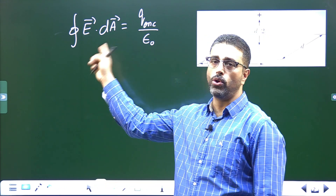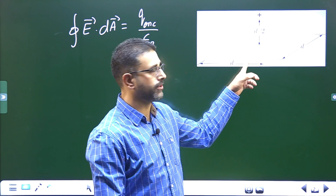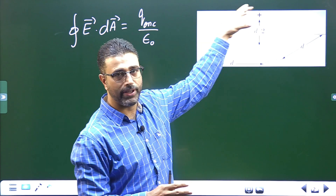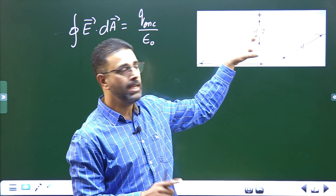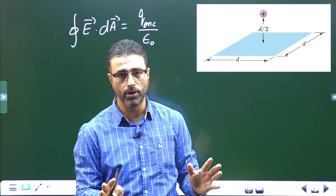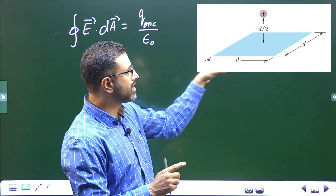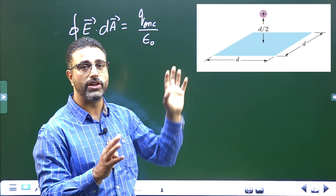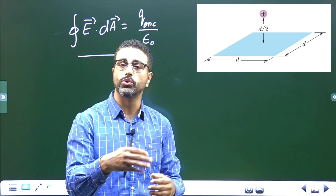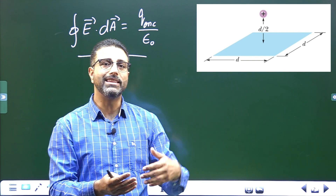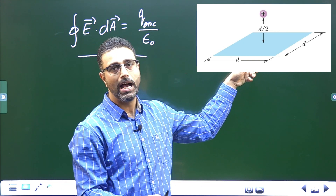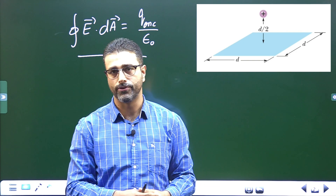The problem is Gauss law is for a closed surface and this is not a closed surface. So what we need to do is build a closed surface around this charge such that the given surface is part of that closed surface. We have to select that closed surface very smartly so that by using Gauss law, if we find the total flux through that closed surface, the next step should be easy to find the flux through this given surface.